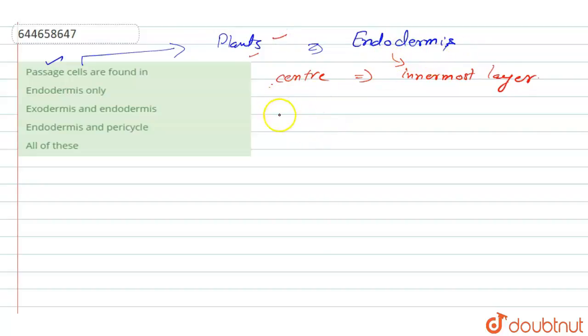So the structure of this endodermis is like they are living cells, and these living cells are arranged in a complex fashion, which means they are tightly packed.